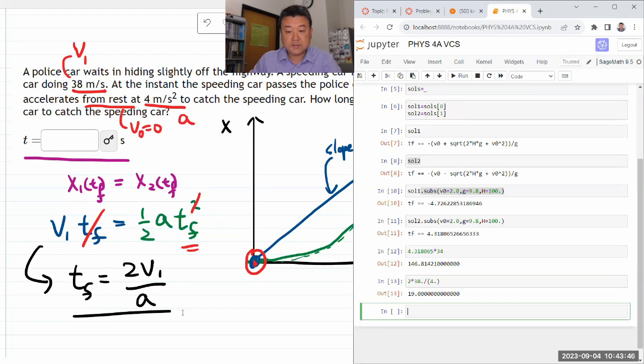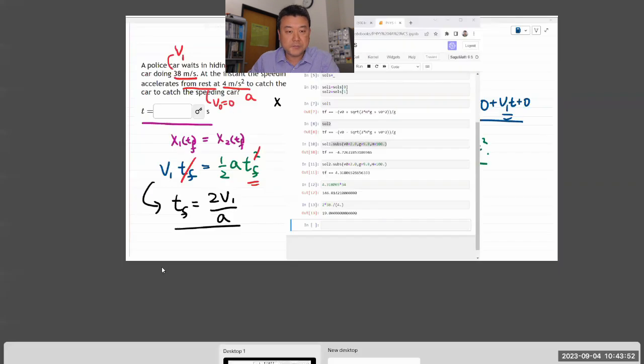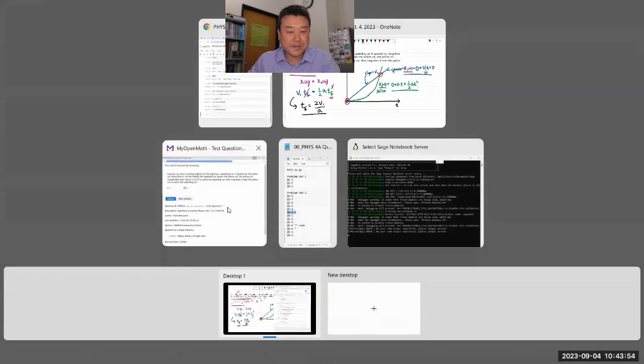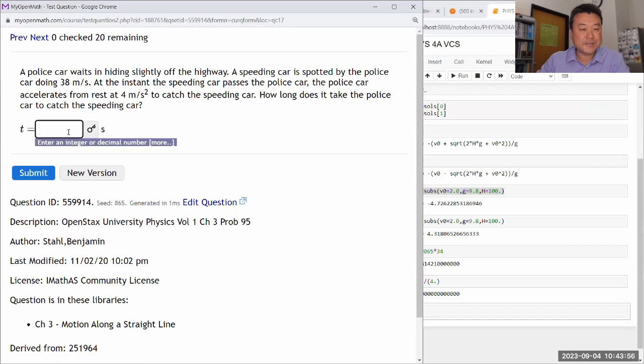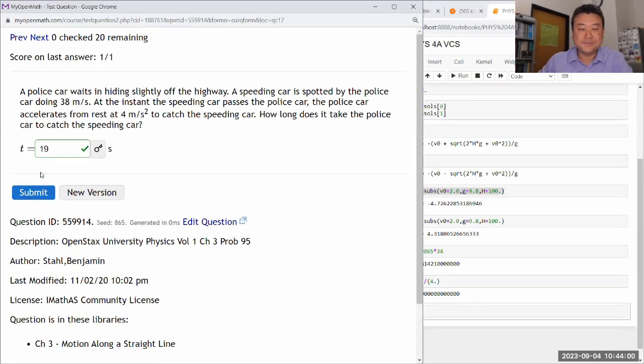So when you do that, you get 19. Oh, exactly. So 19 seconds will be the time there. It's as though they probably randomly generated the 19 seconds first and then worked the parameters backwards. So, yeah, that's the answer. It takes the police 19 seconds to catch up to the speeding car.